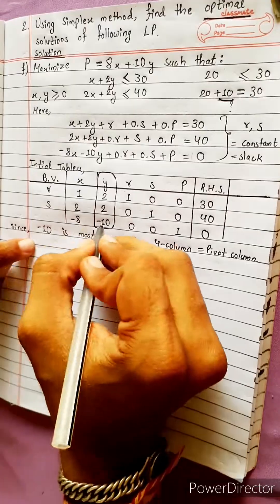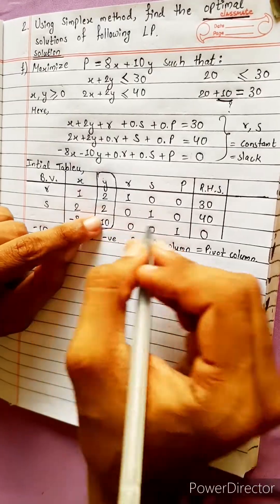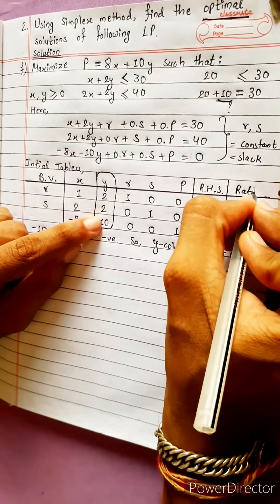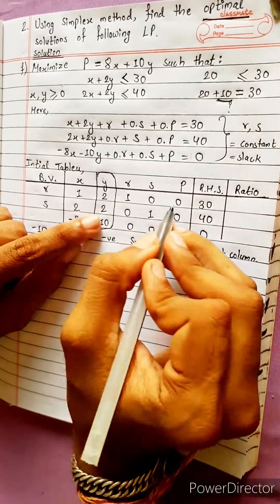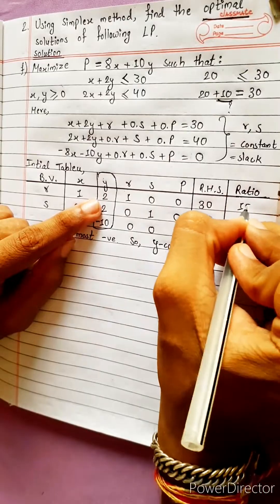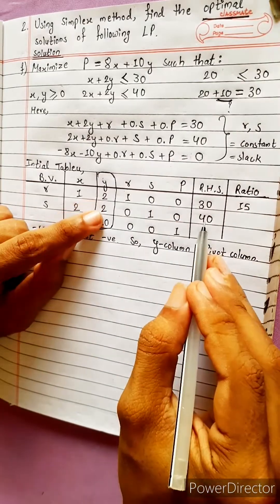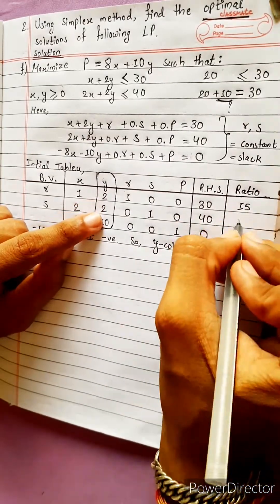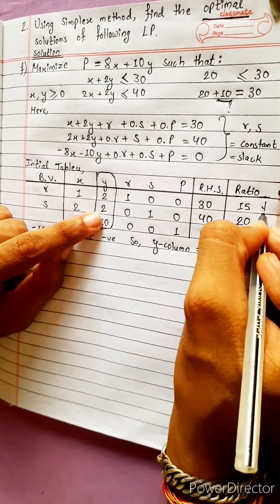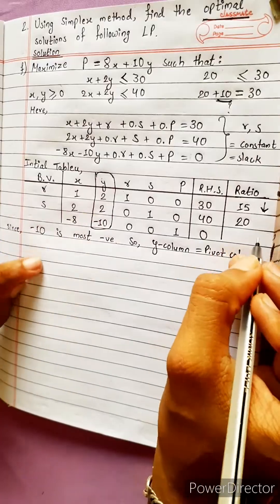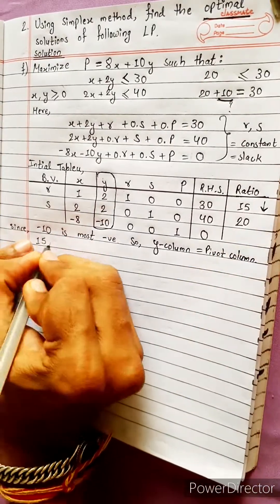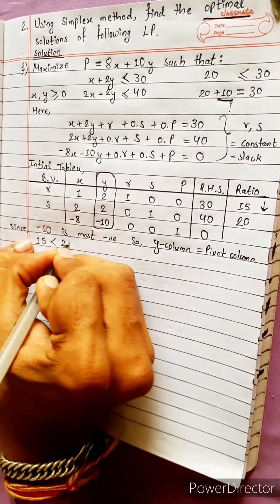Now we divide to find the ratio. 30 divided by 2 is 15; 40 divided by 2 is 20. Since 15 is less than 20, the pivot row is determined.